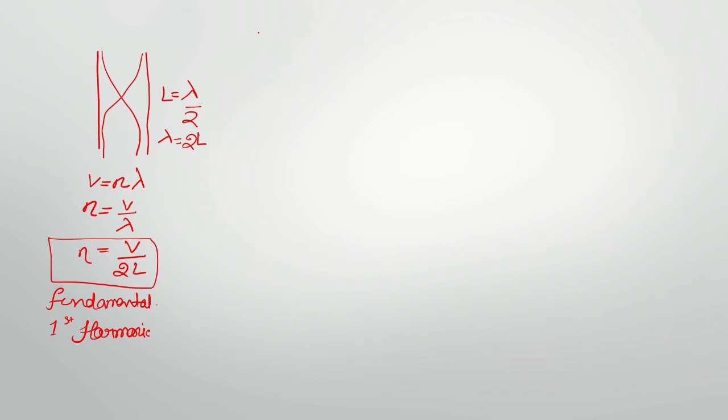Now, the next possible configuration is you will have one more loop between these two open loops, like this. This part is complete one loop. This is half loop and this is half loop. So we can say that we have two loops. And two loops is nothing but your lambda. So L equals lambda. Now, V equals n1 lambda 1. So n1 equals V by lambda 1. Lambda 1 is nothing but L, so V by L.